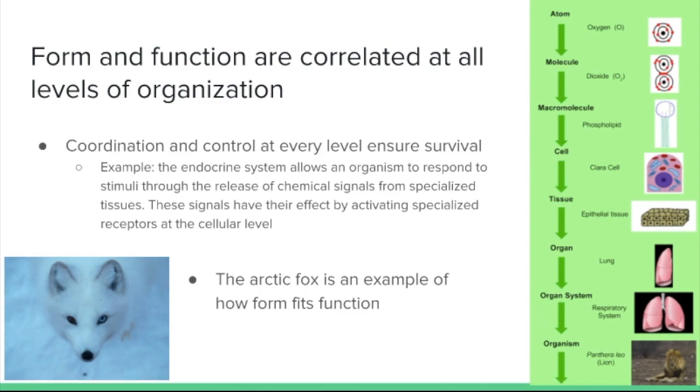So we're going to find that organisms have high levels of correlation between form and function. That's an overriding theme in biology: form fits function. And we see that there is coordinated control at every level, and this ensures the survival of an organism. And a good example that we can discuss is the endocrine system. The endocrine system has the role of responding to stimuli through the release of chemical signals that we call hormones, and these get released from specialized gland tissues, the gland being the organ, and then it's composed of secretory tissues.